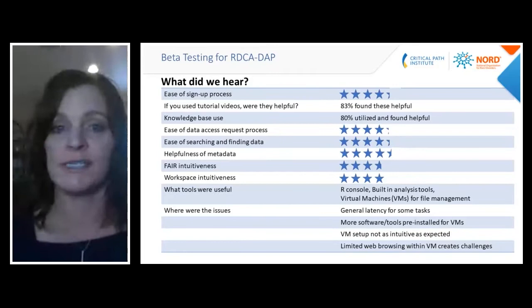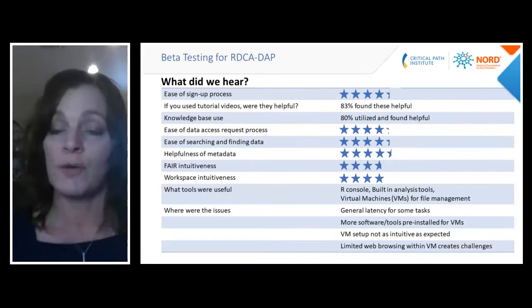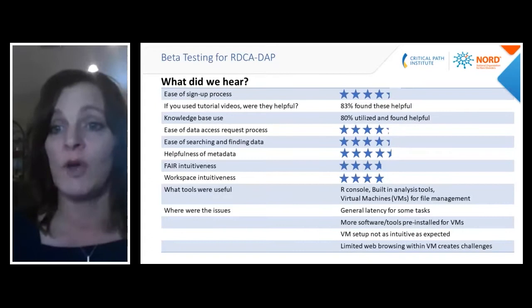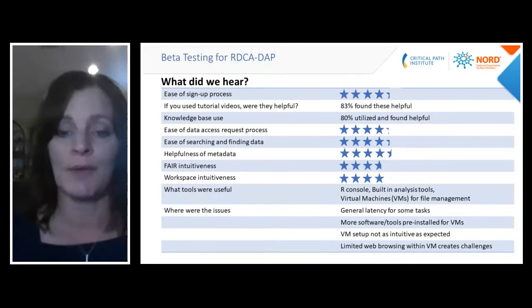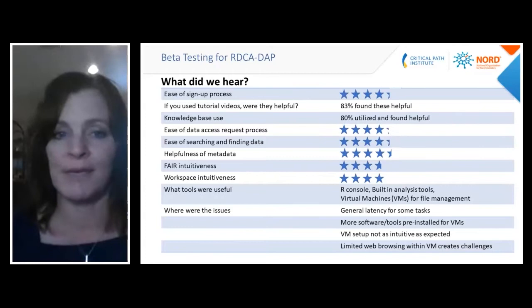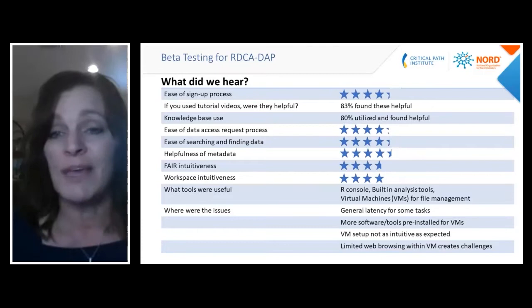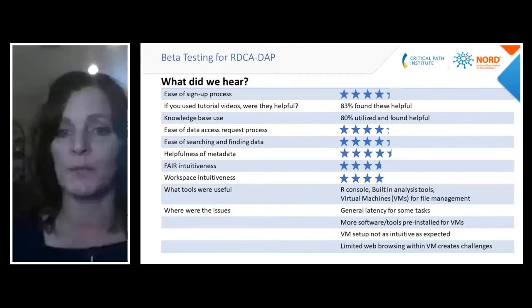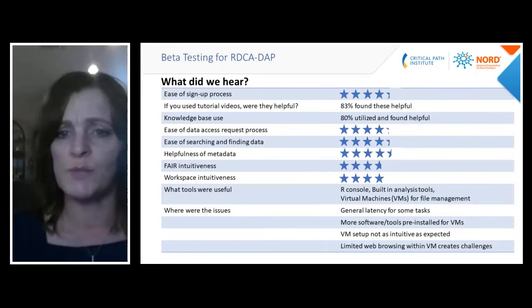People really liked the use of metadata — looking at catalogs and dictionaries to understand the metadata level of what you'd get if you requested access to particular data. They found data easy to find and intuitive with a Google-type keyword search feature. The R console virtual machines and built-in analysis tools that were shown in the demonstration also ranked really well. We also found areas needing improvement: we identified latency issues, ways virtual machines could be more useful out of the box with preinstalled software, and some things that weren't as intuitive as we'd have liked.